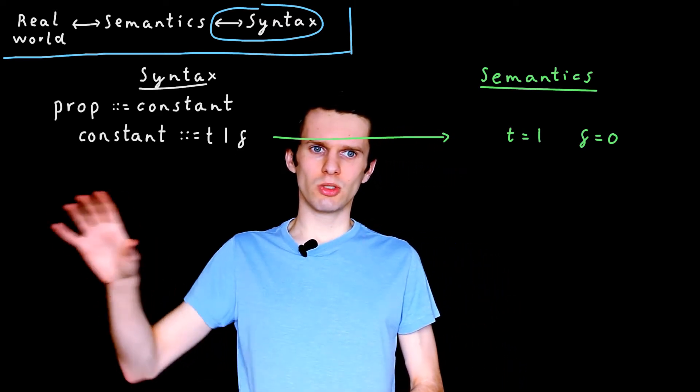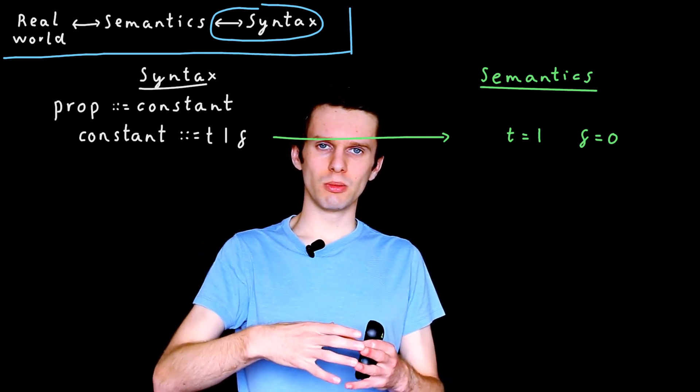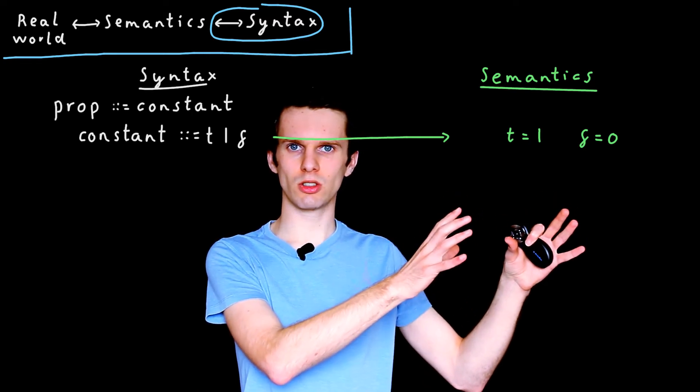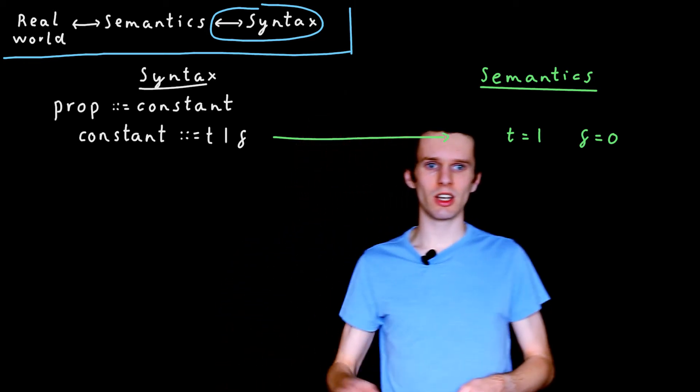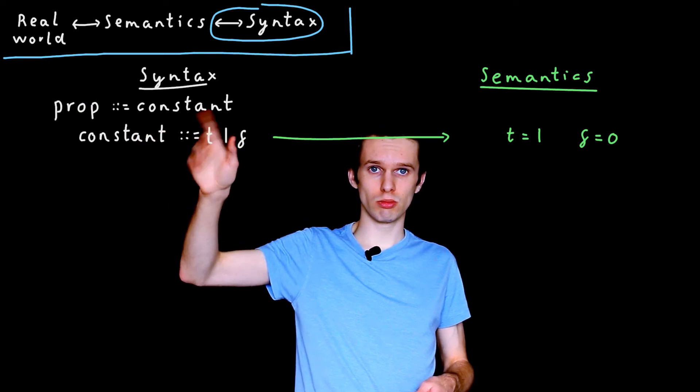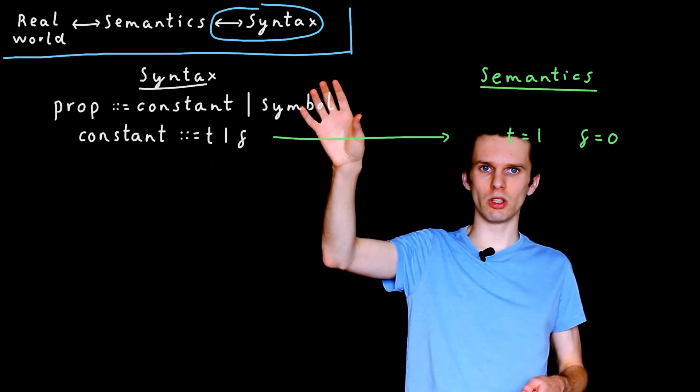And what we note is that actually those sentences can be resolved purely down to the values we define in our semantics, one and zero. And so we abstract by saying, well, a proposition can still equal a constant, the letter T or the letter F, or it can equal what we call a symbol.